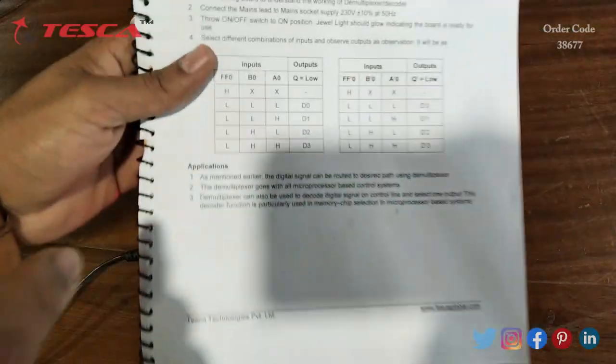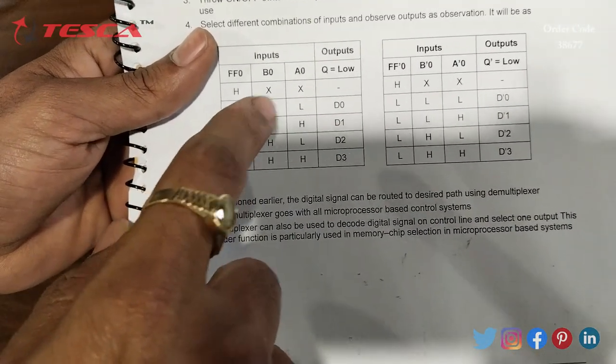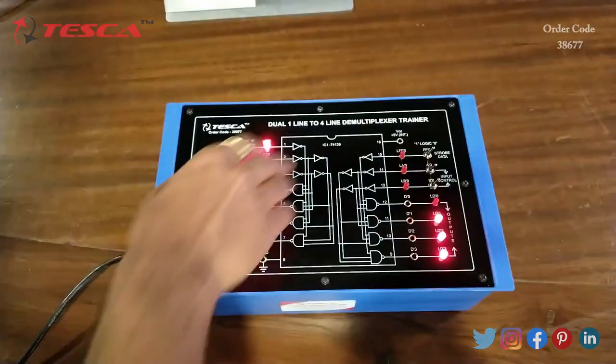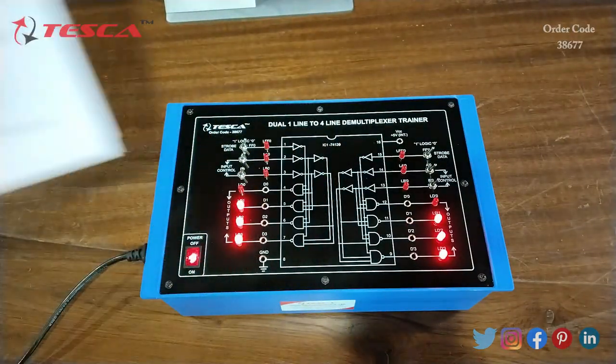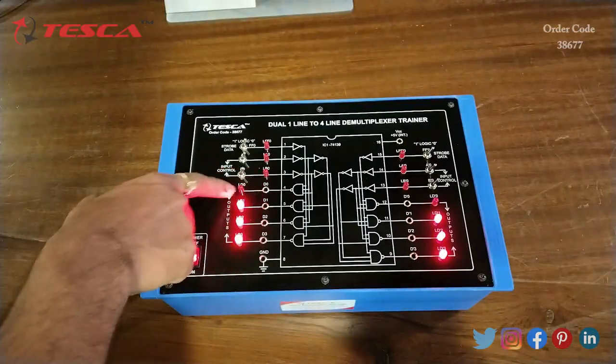Now we will change the positions. First we keep FF0, B0, A0 all low. When we keep all these low we are getting low output at D0.